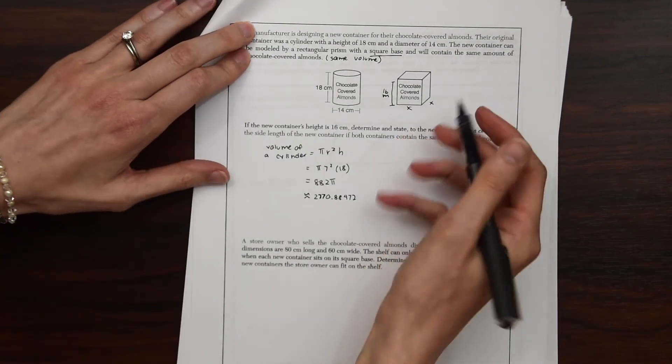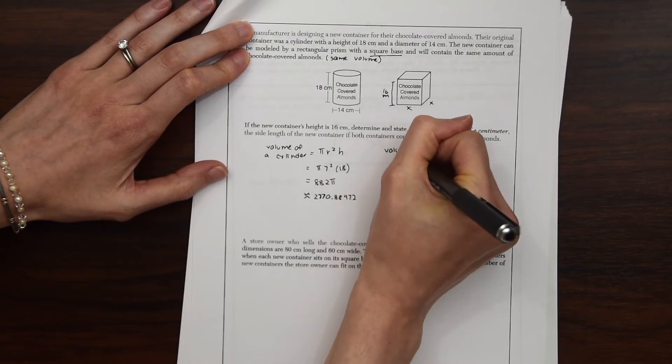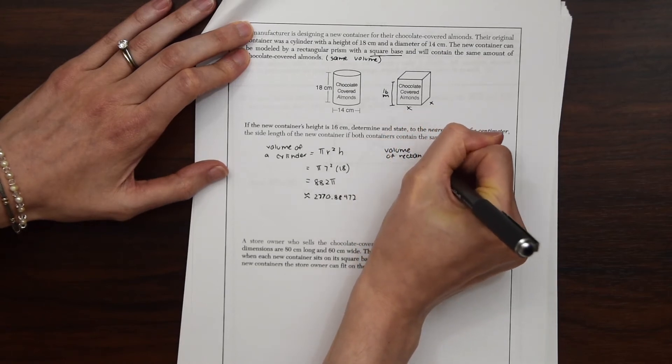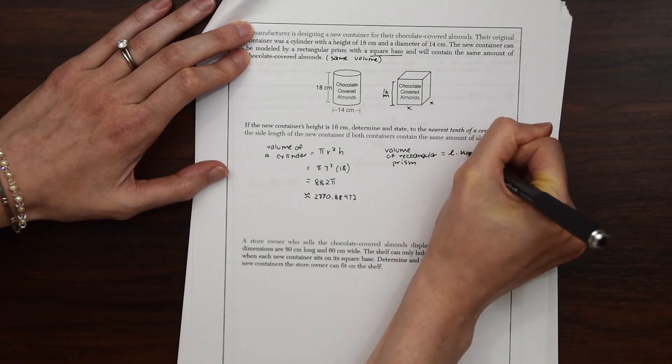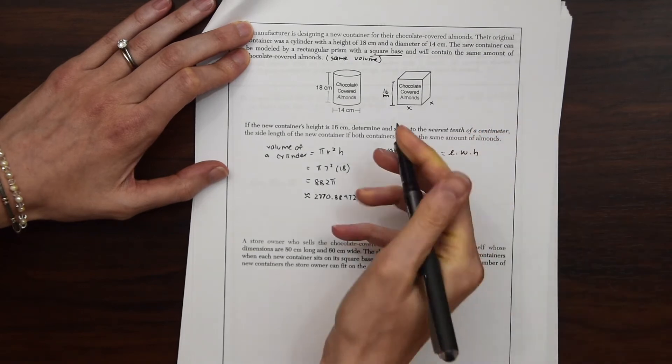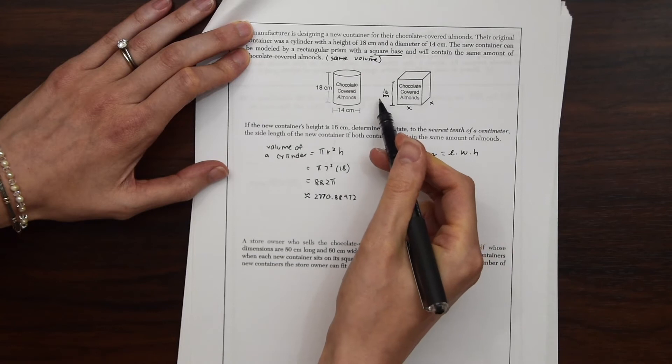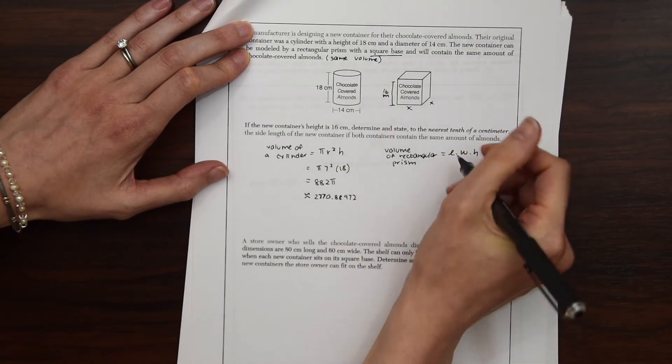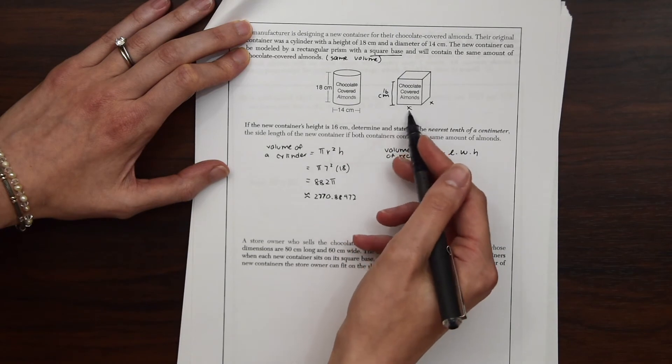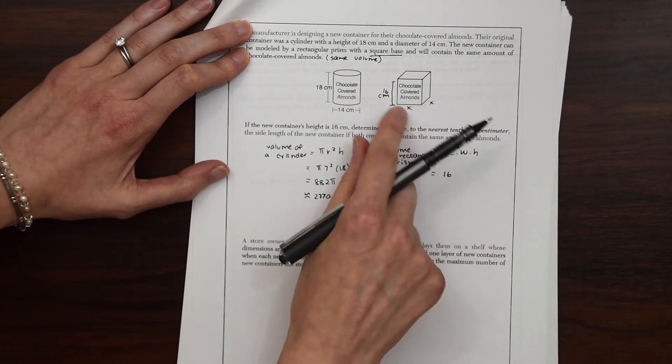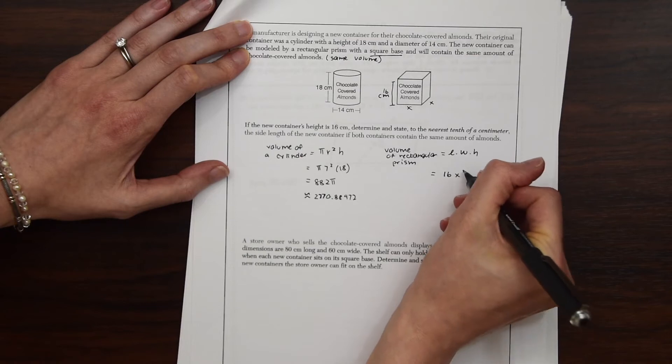And now to get the volume of a rectangular prism, we look at the length times the width times the height. So we know that the height is 16 centimeters. We don't know the side lengths, these missing side lengths, but we know that these are the same because it's a square base. So we just are going to put x squared.